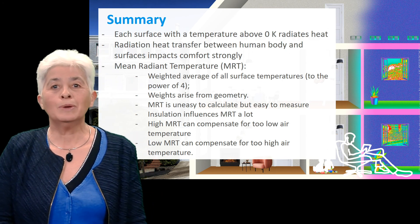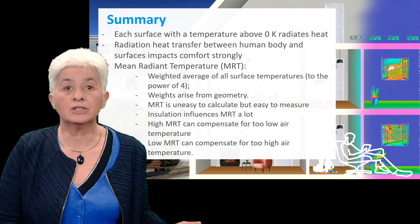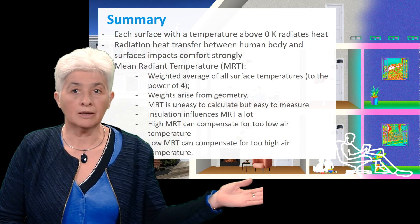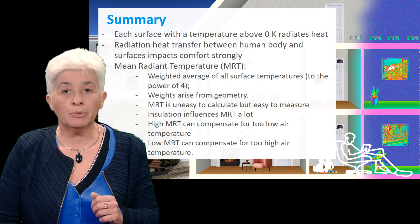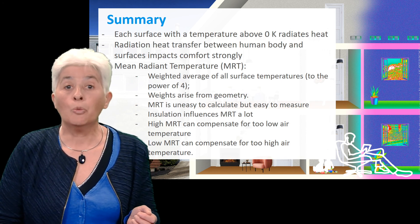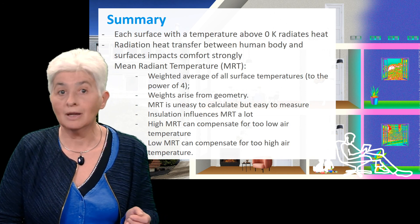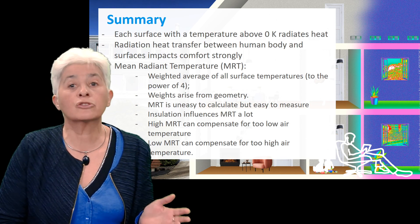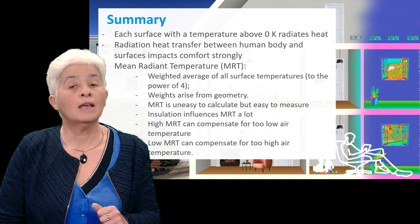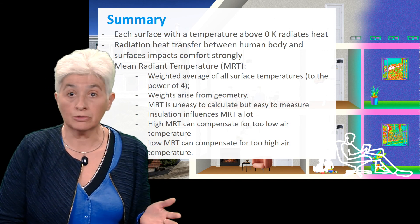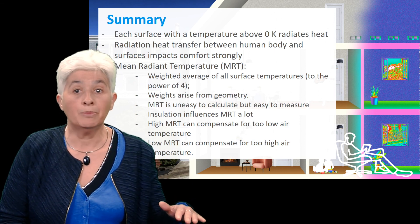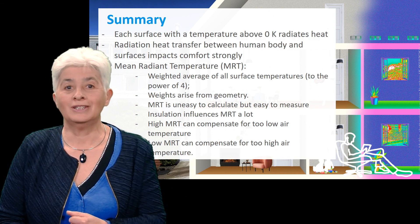To recap this lecture: we discussed heat transfer through radiation, which is induced by any surface having a temperature above absolute zero, and there is therefore heat exchange between the human body and all surfaces surrounding it — this impacts strongly the comfort feeling. The mean radiant temperature is a weighted average of all surrounding surface temperatures based on the fourth power of the temperatures. The weights are called view factors and are purely geometric. Mostly, incoming solar radiation is excluded from MRT calculations. It may be quicker to measure the MRT than to calculate it from surface temperatures. The MRT is strongly influenced by insulation, and most importantly, a high mean radiant temperature can compensate for a low air temperature and vice versa. Thank you for listening.